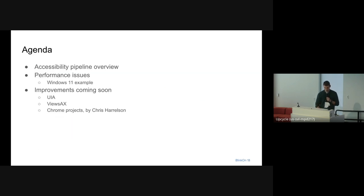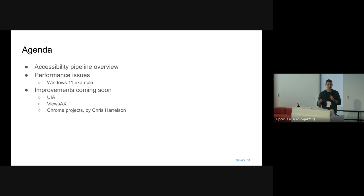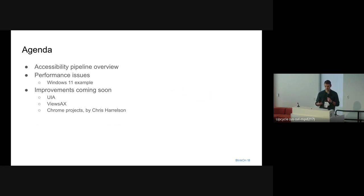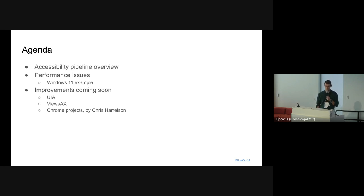We have a few challenges. We're going to start by going over a quick overview of our accessibility pipeline and why it has to be so complex in the first place. Then we're going to discuss the performance issues we have that arise from that solution. And then we're going to talk about the ongoing projects at Microsoft Edge related to that pipeline. And if Chris Harrelson is available — I think he is, he's right there — if we still have time, I'm going to invite him up to share a few things about the ongoing projects in the Chrome team.